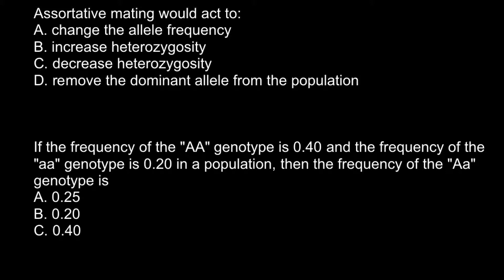So here is the first question or statement. Assortative mating would act to: A. change the allele frequency, B. increase heterozygosity, C. decrease heterozygosity, and D. remove the dominant allele from the population.